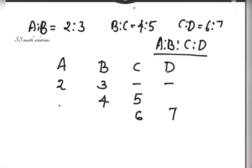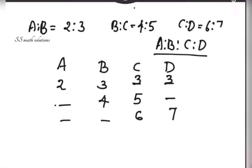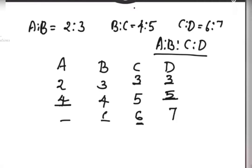Now we have empty places to fill because of 3 ratios. The nearest number for the empty place near c is 3, so we keep 3 there. For d, the nearest number is again 3, so we keep 3 there. The next empty place has 4 as its nearest number, so we keep 4 there. Then 5 is the nearest number for the remaining empty place near d, so we keep 5 there. For the remaining empty places near c, 6 is the nearest number, so we keep 6 there.